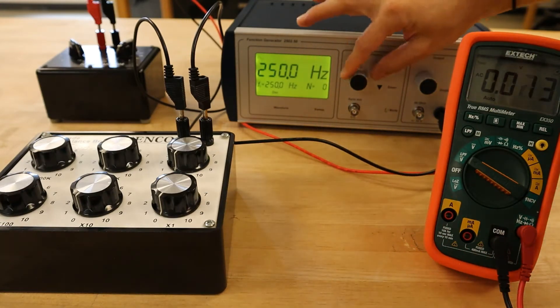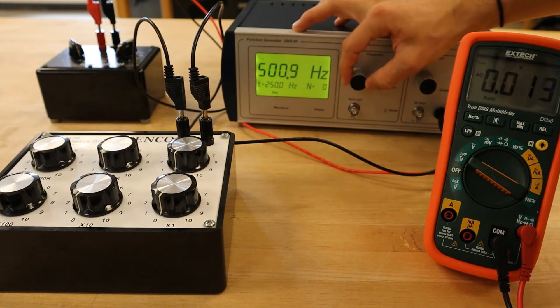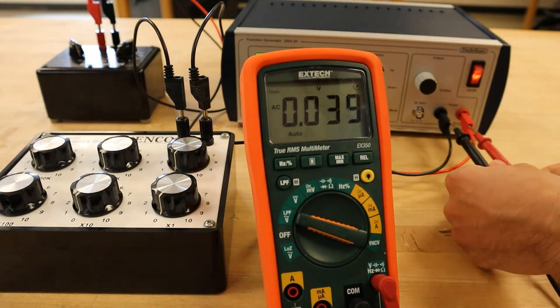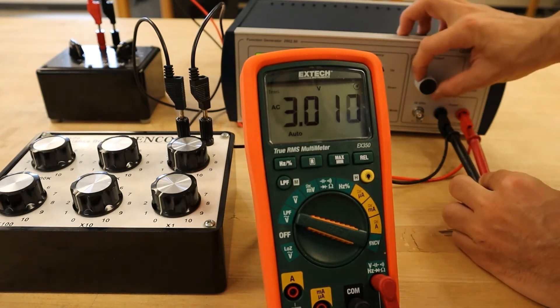Next we'll change the frequency of the function generator to 500 Hz, then use the DMM to set the supply voltage to 3 volts RMS again. We will then determine the new voltage across the decade resistor and perform the same calculations as before.